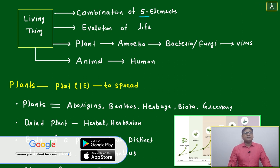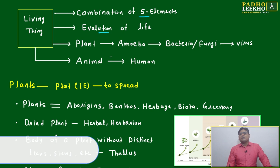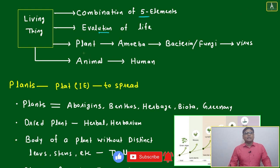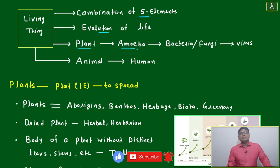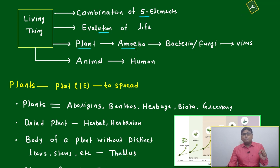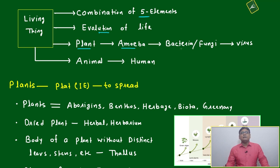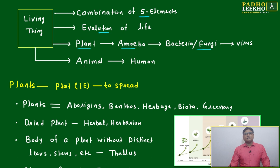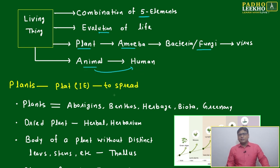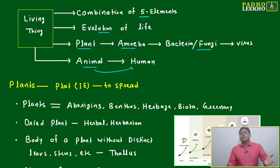Based on these five elements, life has started. We'll try to understand how life evolved — the evolution of life. Different types of living things include plants, amoeba — which is a very initial protozoan, a very starting single-cell organism — and afterwards bacteria, fungi, and virus. This forms one chain.